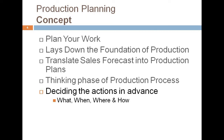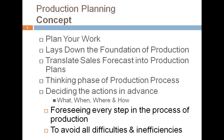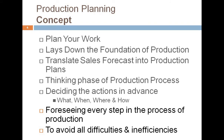In this thinking phase, we are deciding the actions we are going to take in the near future — what we are going to produce, when we are going to produce, where we are going to produce, and how we are going to produce. Planning means deciding in advance what we need to do in the future. We try to foresee every step in the process of production in order to avoid all difficulties and inefficiencies that may arise when we actually execute the production processes.